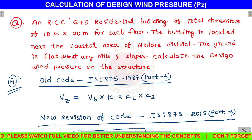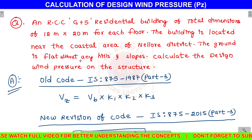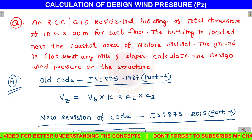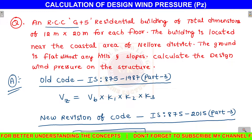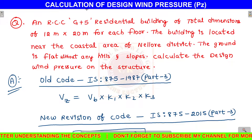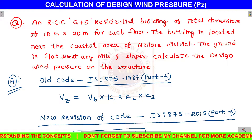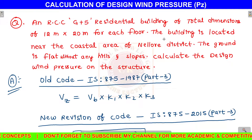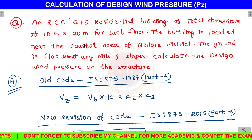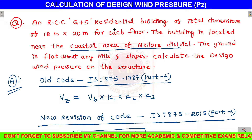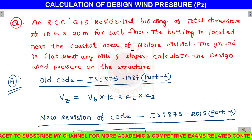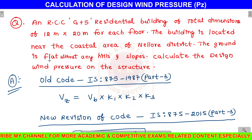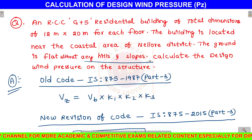Hello Friends, welcome to Civil Knowledge YouTube Channel. In this video, we will calculate the design wind pressure. Our building is an RCC G plus 5 residential building. The floor area is 12 meters width and 20 meters length. The building is located near the coastal area of Nellur district. The ground is flat without any hills and slopes.